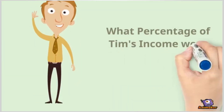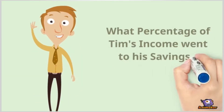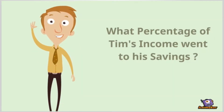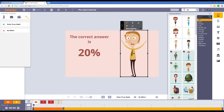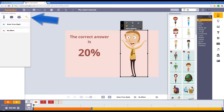Now in this course, we'll start off by watching the pie chart animated video. Then, after watching the video, I will guide you on how to add and animate the text and characters for this lesson using the Animaker Magic Wand tool.